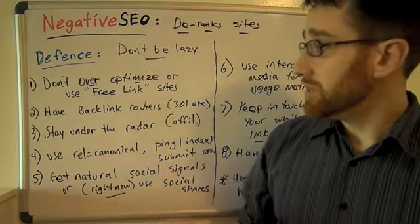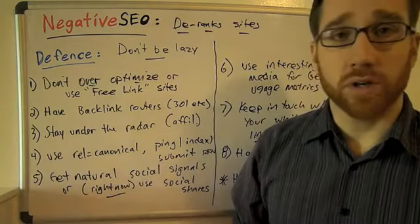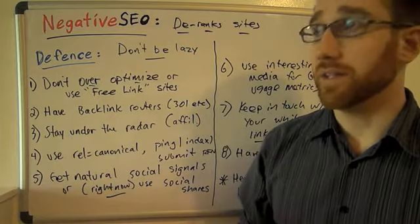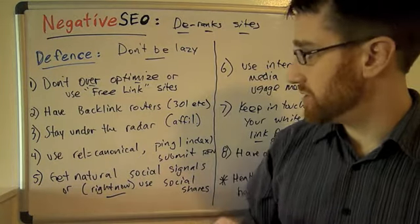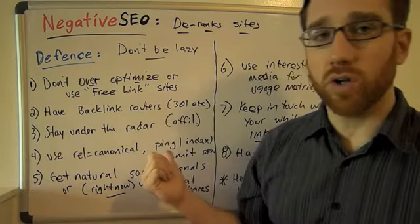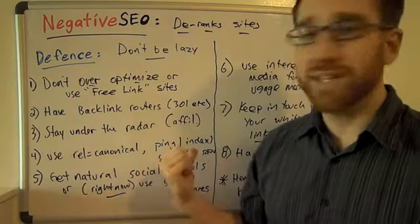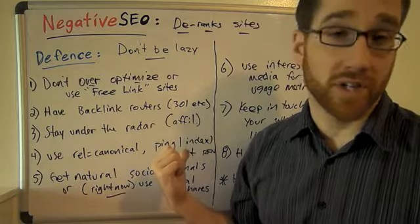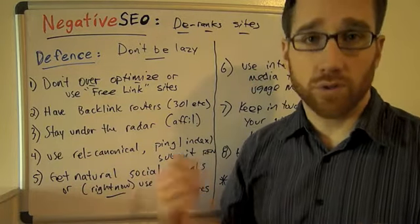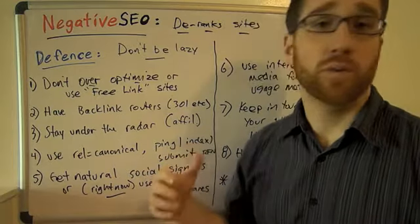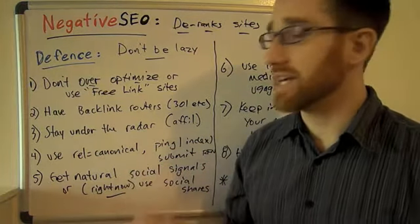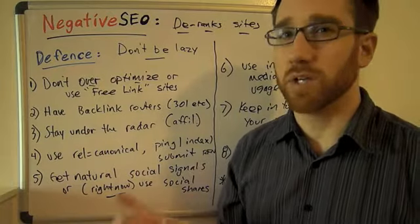The next is the dupe content problem. Make sure you use the rel canonical attribute in the link tag. You can also use rel author to get Google to know what content is yours. And the second you put something up on your website, ping all the ping servers, index it through your copy of Nuke or whatever indexer you use, and submit your website to Google right away — so that anybody who's trying to use that tactic against you, it'll be much, much harder for them.